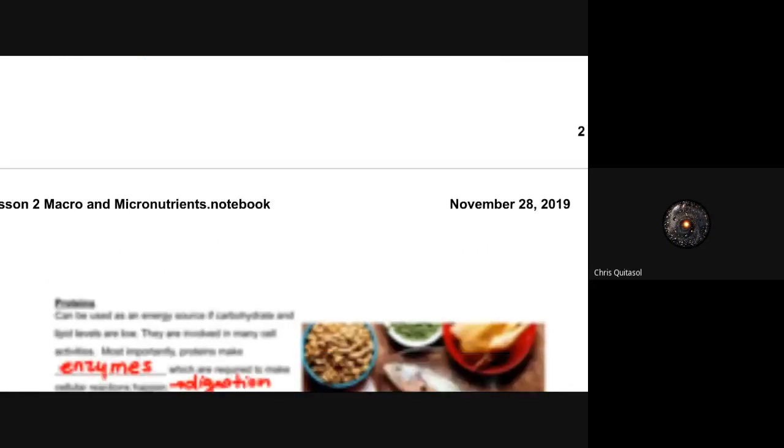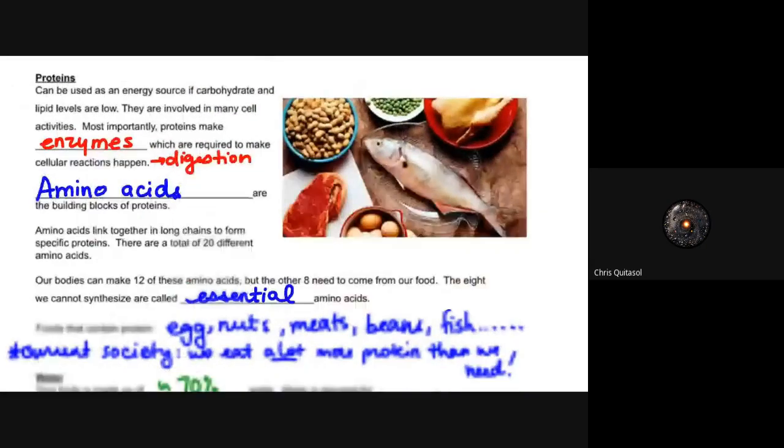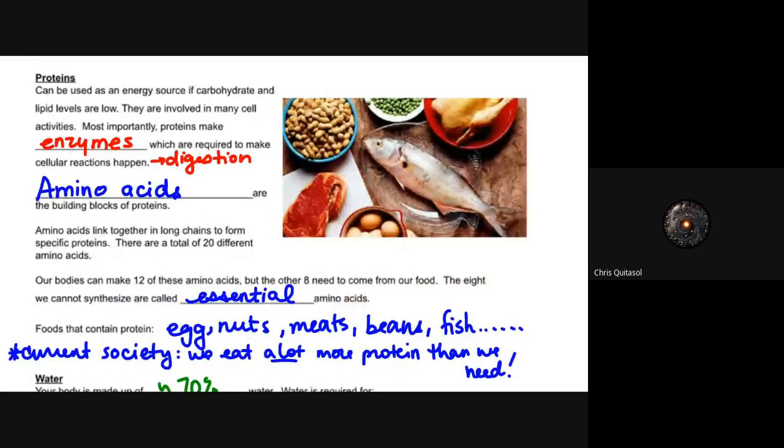Proteins is the last macronutrient that we're going to look at that is created or utilized from animal or plant life. And they can be used as an energy source if those carbs or fats are low, but they are usually more important for those cellular activities. So the things that are responsible for breaking down and making the parts of the body that are required for day-to-day growth and healthy living are usually made up of those proteins. So enzymes, which help with digestion and breaking down things, are made out of proteins, and the proteins are made up of what's called amino acids. There's 20 of them that you'll have to know for next year, but it's not something you need to know for now.